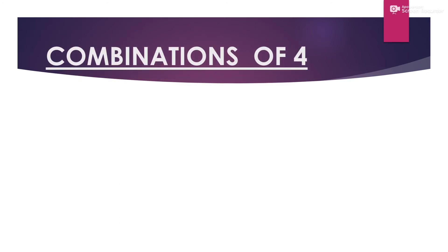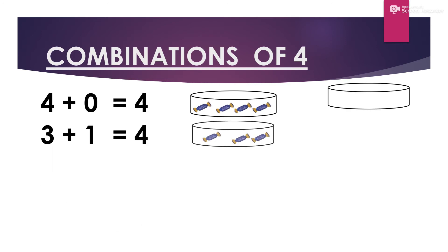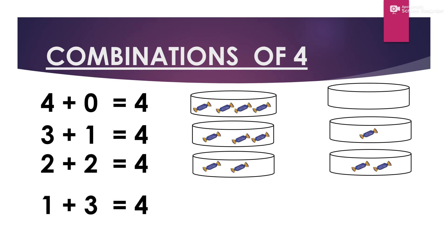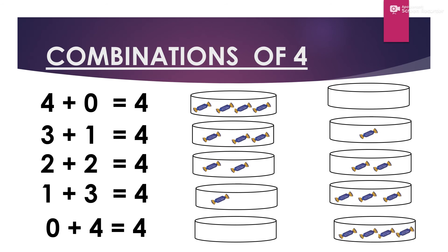There are five ways to make the combinations of 4. 4 and 0 makes 4. 3 and 1 makes 4. 2 and 2 makes 4. 1 and 3 makes 4. 0 and 4 makes 4.